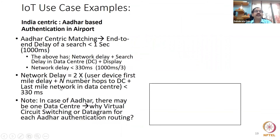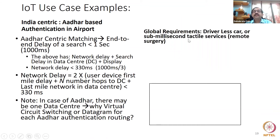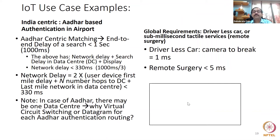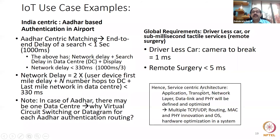So the Aadhaar example breakdown — 1000 milliseconds → 330 milliseconds per part — has been written out. Similarly, for driverless cars needing one millisecond, and for remote/robotic surgery — a very hot topic in medical science now, where no single bit loss is allowed and delays must be minimal. Hence, a service-centric architecture is coming, where application layer, transport layer, network layer, data link layer, and physical layer will be defined and optimized per application — multiple TCP, UDP, routing protocol variants.